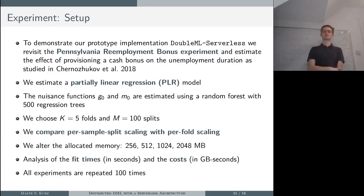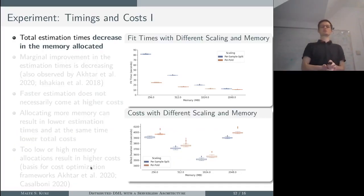Let us have a quick look at the setup for our experiment. We use a real data example from the literature: the Pennsylvania Re-employment Bonus Experiment. We fit the partially linear regression model. For our nuisance functions g and m, we use a random forest with five folds and 100 repetitions. We compare the blue versus orange mode, allocate different amounts of memory, and then analyze the fit times and costs. Each experiment is repeated 100 times.